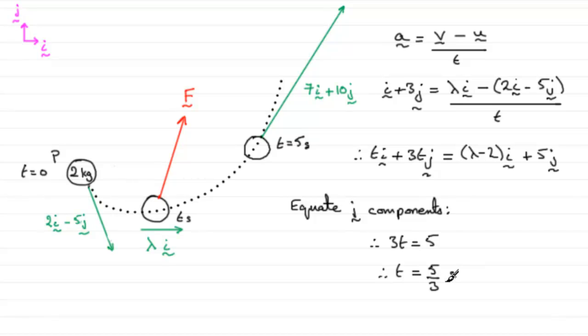If the question had asked us to go on and find out what that velocity was there, all we would need to do is just say that t, when we compare the i components, t would equal lambda minus 2, and just substitute t being 5 thirds in there and get what lambda is.